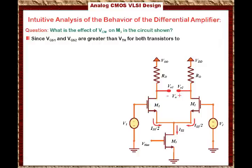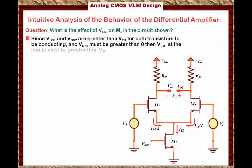Since Vgs1 and Vgs2 must be greater than the threshold voltage for both transistors to be conducting — Vgs must be greater than V_threshold, otherwise we don't have enough voltage to conduct — both transistors have to have Vgs greater than the threshold voltage. Also, Vds2 must be greater than 0 to be conducting. Therefore, the common mode voltage at the input must be greater than the threshold voltage in this particular circuit. There is a strict requirement on the minimum input voltage at the input stage of the differential amplifier.